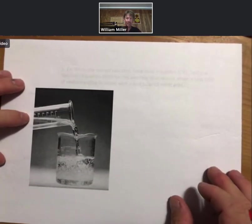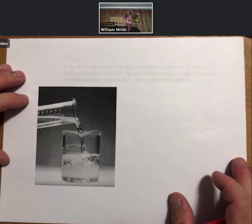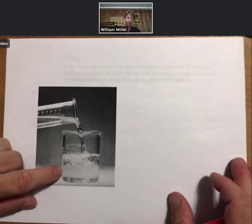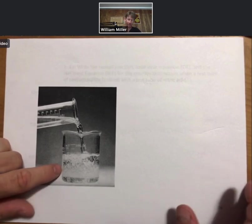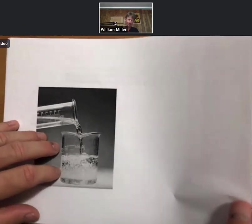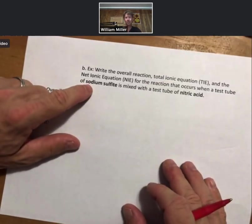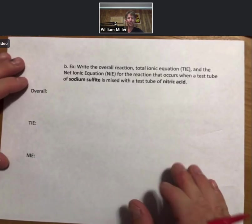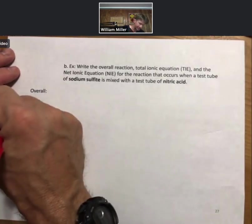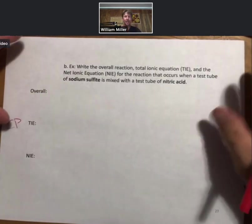And that will allow us to complete the rest of this problem as a companion problem. And this is an attempt to show these two solutions being poured together and creating bubbles. Those bubbles are the carbon dioxide. And an example of sodium sulfate and nitric acid, this too, will be a companion problem.